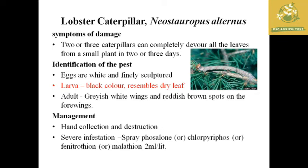The next pest is the lobster caterpillar, where the scientific name is Neostauropus alternatus. The symptom of damage: two or three caterpillars can eat a whole small plant in two to three days, making it one of the dangerous pests of tea crop. The egg is said to be white with a fine sculpture.